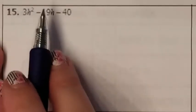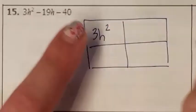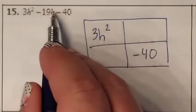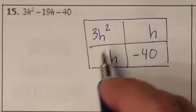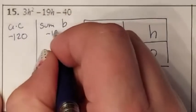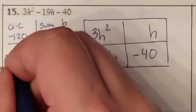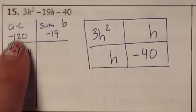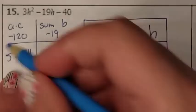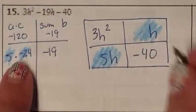Problem 15. Looking for a GCF — I see no numbers they could all divide and no variables they all share, so my GCF is 1. Because A is not 1, I need to do an area model. The 3H squared goes up here, the negative 40 goes down here. I have to find how to split the middle H terms, which means I need to do A times C adds up to B. A times C is negative 120; B is negative 19. The numbers 5 and negative 24 multiply together to give me negative 120, and when I add them I get negative 19. So positive 5 and negative 24 go into the area model.